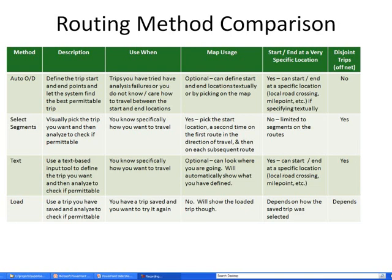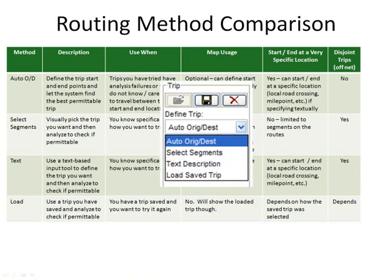The routing process provides several options for finding a trip that is permittable for the specific vehicle configuration. There are two main groups of routing methods. One method allows you to tell the system where you need to start and end, and then ask it to find the most preferred permittable trip. The other methods allow you to specify a trip you want to take and ask the system to analyze it to determine if it is permittable. The define trip options box on the routing tab provides a list of the routing options.